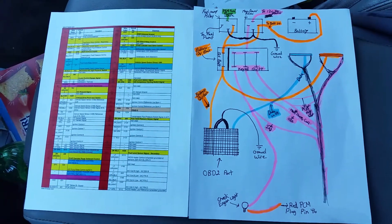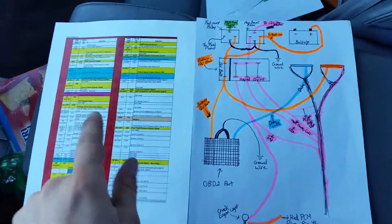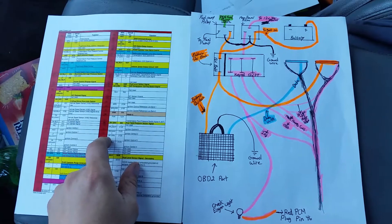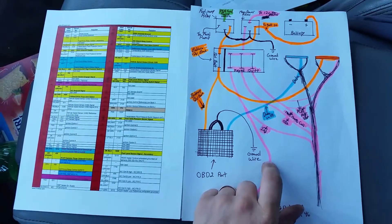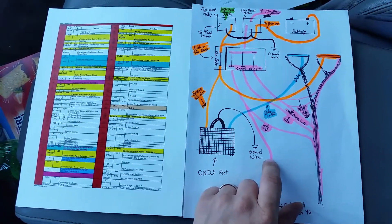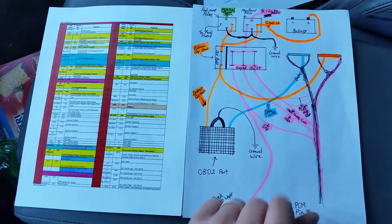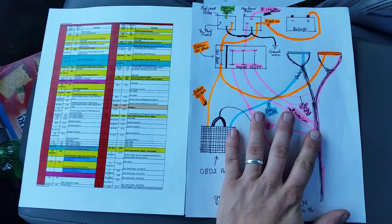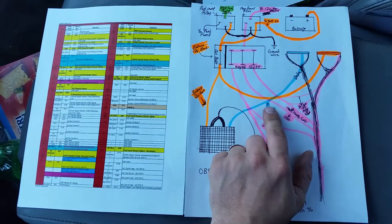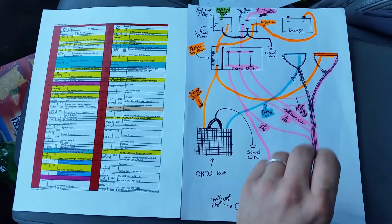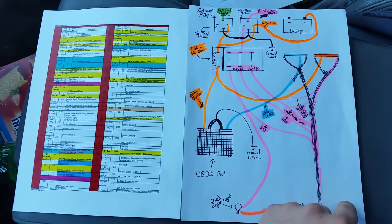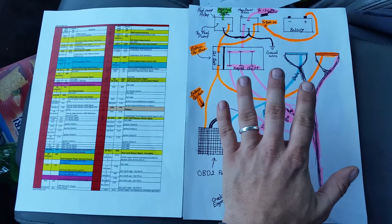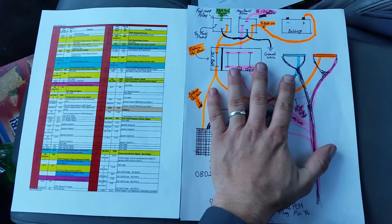On the left here, this is the wiring diagram that I got from LT1swap.com. On the right, this is a diagram that Cory Prince on Facebook created. He's been helping me a lot, explaining what everything does and how to hook it up. I took the drawing he sent me and redone it to make my own.